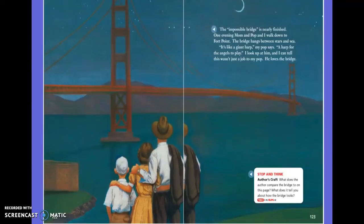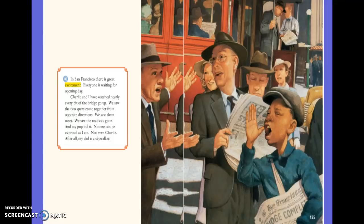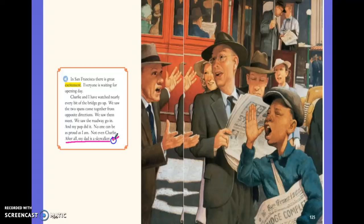The impossible bridge is nearly finished. One evening Mom, Pop, and I walk down to Fort Point. The bridge hangs between stars and sea — it's like a giant harp. My Pop says: a harp for the angels to play. I look up at him and I can tell this wasn't just a job to my Pop. He loves the bridge. Charlie and I have watched nearly every bit of the bridge go up. We saw the two spans come together from opposite directions, saw them meet, saw the roadway go in. And my Pop did it. No one could be as proud as I am — not even Charlie. After all, my dad is a Skywalker.